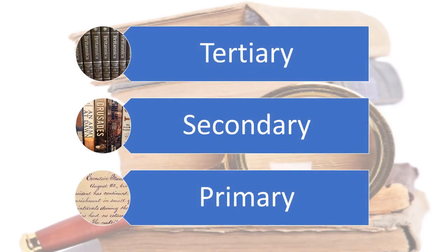From most general to most specific, the three types of research sources are tertiary sources, which we also call reference sources; secondary, which we also call history books and articles; and primary sources. You use these in very different ways at different stages of your research, though you're likely to find you use them in overlapping ways, if for no other reason than research is nonlinear to the point of being messy.